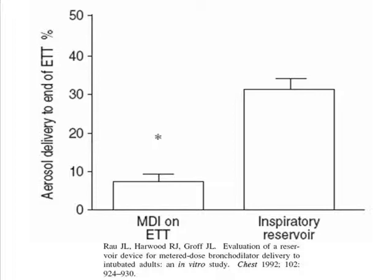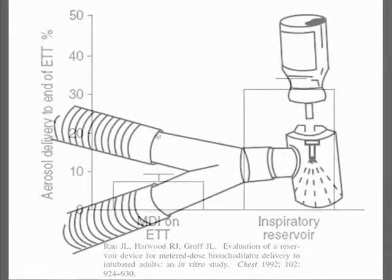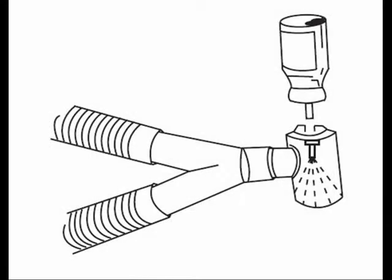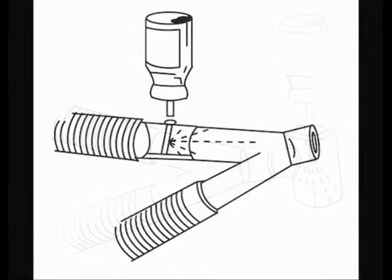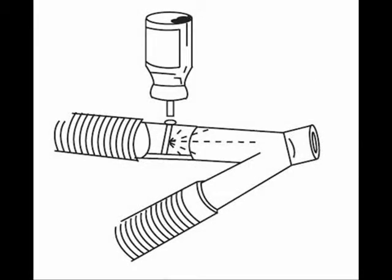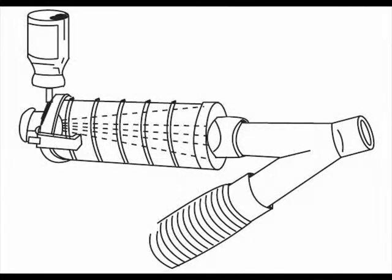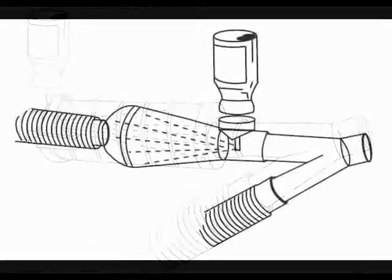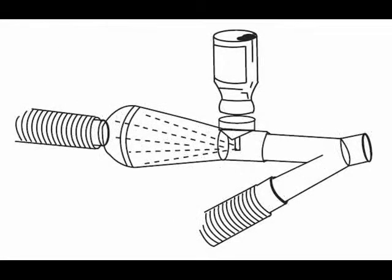In a study done by Rao and colleagues, it was shown that the MDI on the endotracheal tube versus having an inspiratory reservoir had a dramatic difference in actual drug delivery. The further away the MDI was placed from the patient on the inspiratory limb, with the addition of an inspiratory reservoir, seemed to improve the overall deposition and delivery of the drug to the individual.